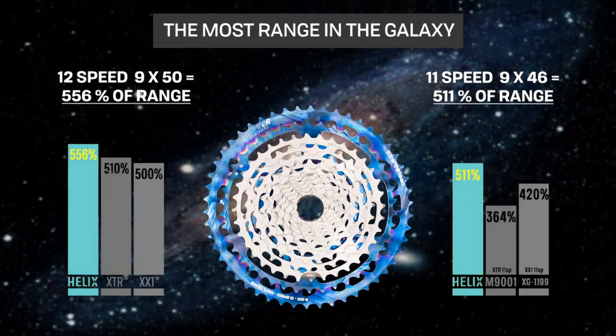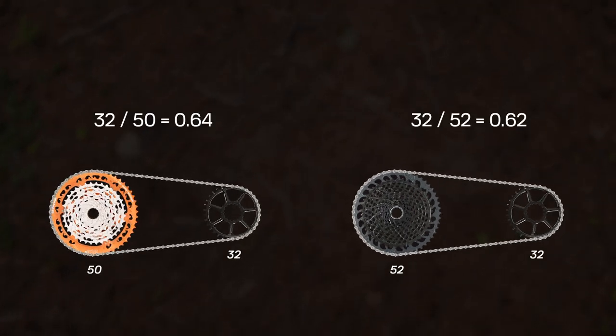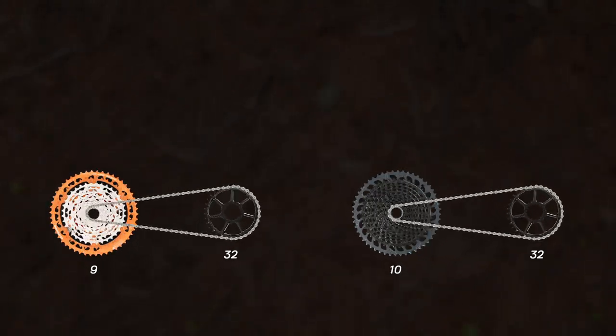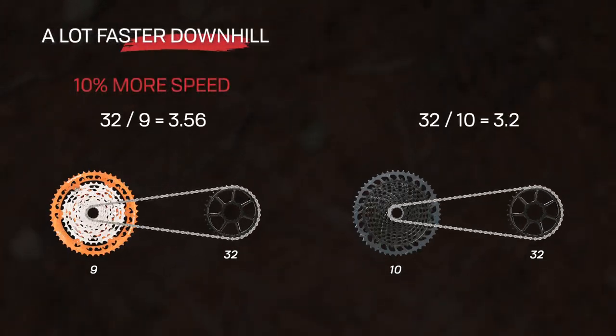Let's run these numbers. There's a 3% difference in force required to pedal a 52-tooth cog over a 50-tooth. But the Helix 9-tooth cog gives you 10% more power over a 10-tooth cog.